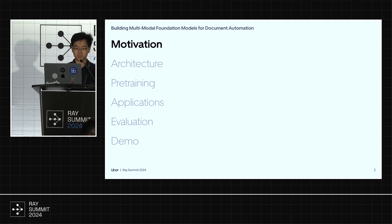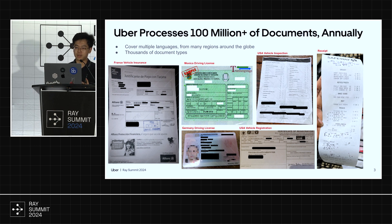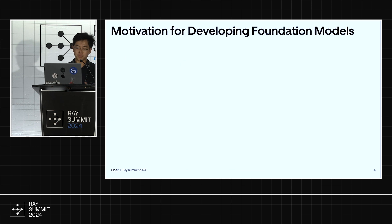Before we talk about pre-training and the model, it's important to share context about why we're building this. Inside Uber, we process 100 million-plus documents annually. Think of Uber's business as an iceberg — these documents are the huge part under the water surface, invisible but very essential for normal operations. Drivers onboarding need to upload their license, vehicle insurance, registration, and all kinds of forms. We also gather receipts from shoppers for grocery delivery, covering many document types and different languages.